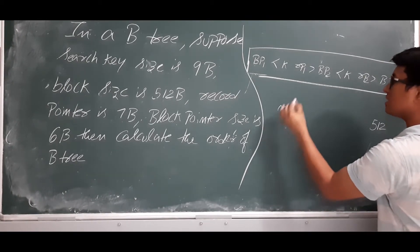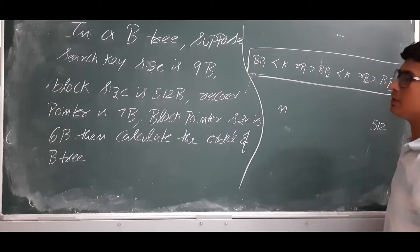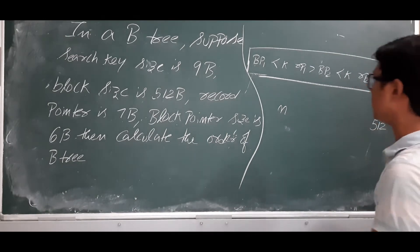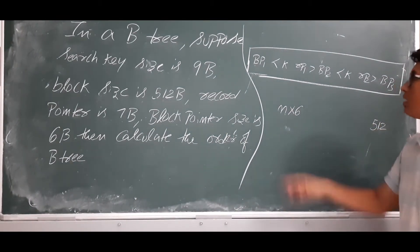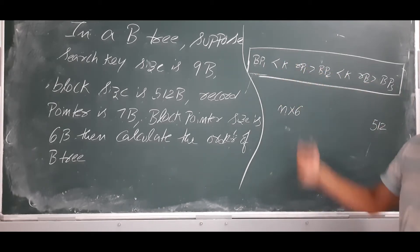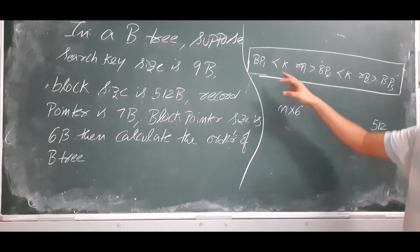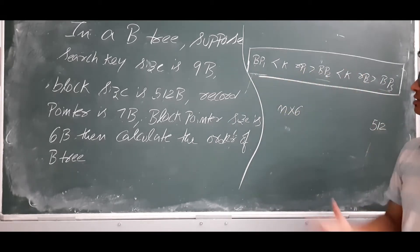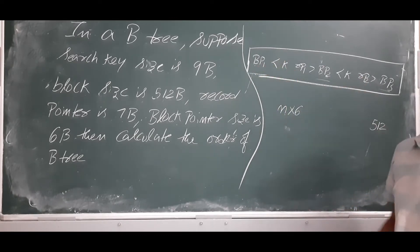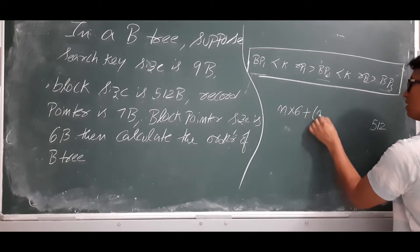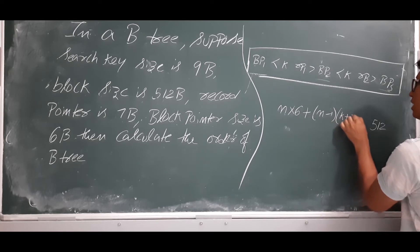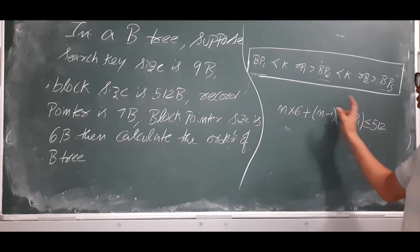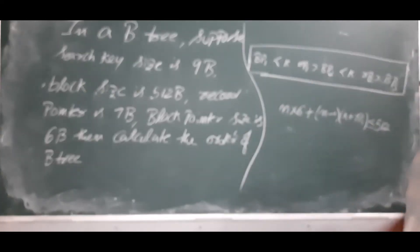Let me take the number of block pointers as n, since we don't know the value. We have n block pointers, each of size 6 bytes. If we have n block pointers, how many key-record pointer pairs will there be? Obviously n minus 1. For example, with 3 block pointers there are 2 key-record pointer pairs. So with n block pointers, there are n minus 1 key and record pointer pairs. The total size will be less than or equal to 512 bytes.